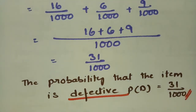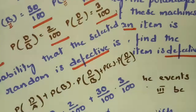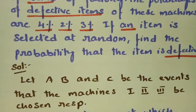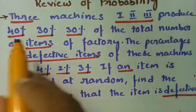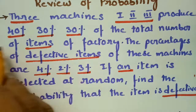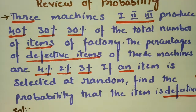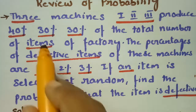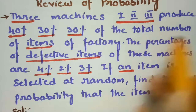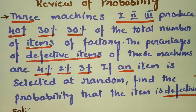This is how we calculate the probability. Three machines A, B, C produce 40%, 30%, and 30% of the total number of items, and the final answer is 31/1000.